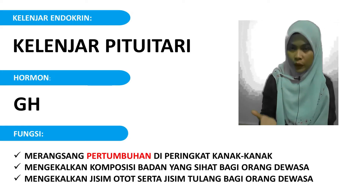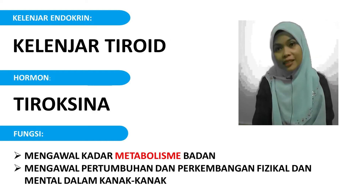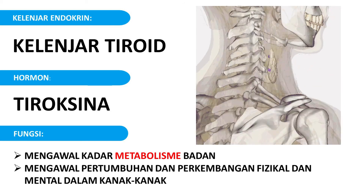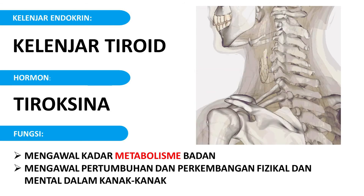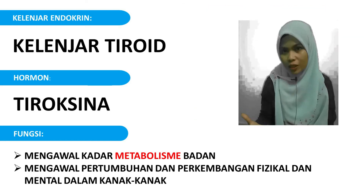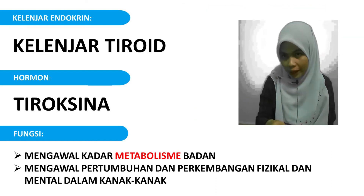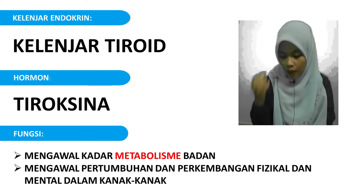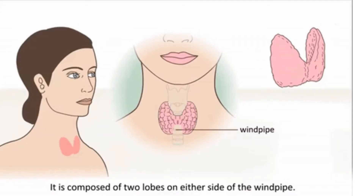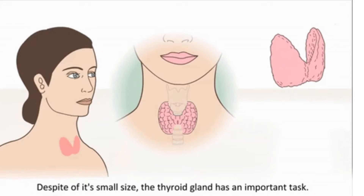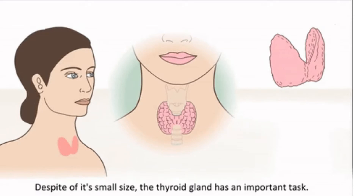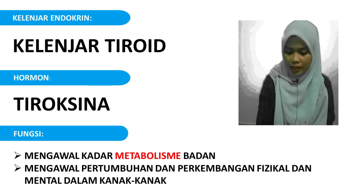Kita dah ada Kelenjar Pituitary. Yang kedua, kita sambung dengan Kelenjar Thyroid. Kelenjar Thyroid menghasilkan hormon tiroksina. Tiroksina mengawal kadar metabolisma badan. Maka bila berkaitan dengan metabolisma badan, dia mengawal pertumbuhan dan perkembangan fizikal dan mental dalam kanak-kanak.